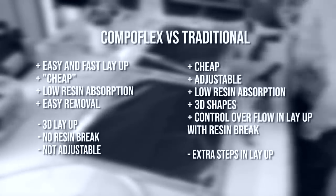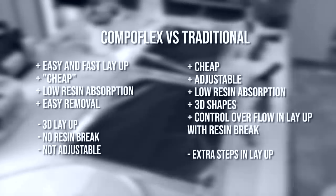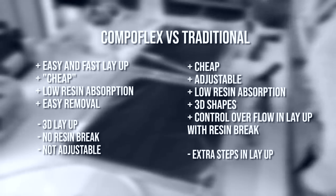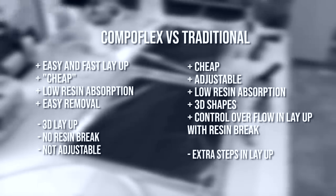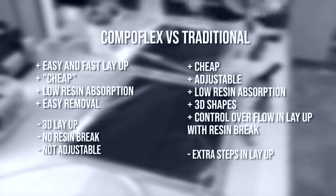The negative side is I think it's quite difficult to do a 3D layup without having bridging. You cannot add a resin break. I like to have a resin break, meaning just having peel ply so the resin at the end of the infusion will slow down. Another thing is you cannot adjust it. I like to have different flow meshes for different parts.